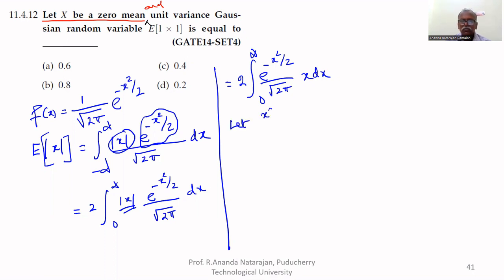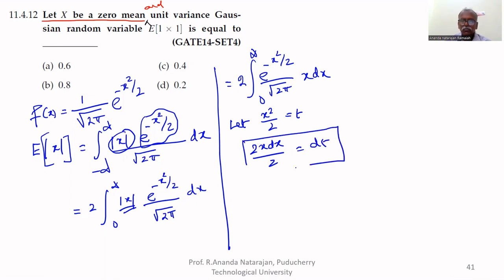Let x squared divided by 2 equal to t. This means x dx equals dt. As x tends to 0, t also tends to 0. When x tends to infinity, t also tends to infinity.